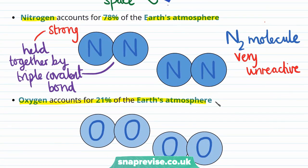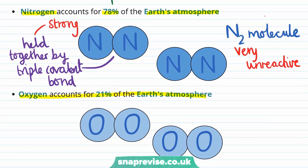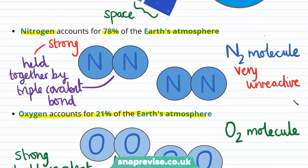Oxygen accounts for 21% of the Earth's atmosphere, and in the same way as for nitrogen, oxygen exists as the diatomic O2 molecule, this time held together by a strong covalent double bond.